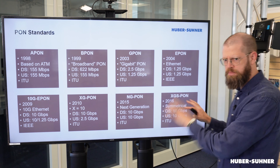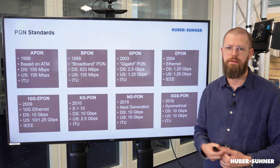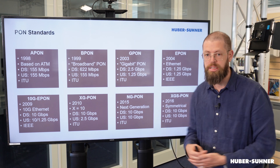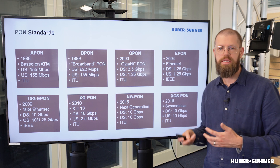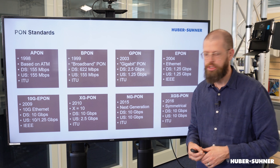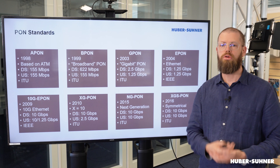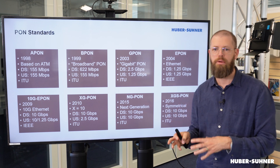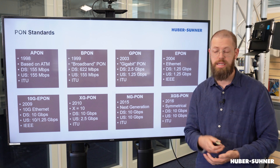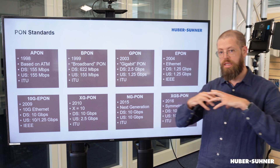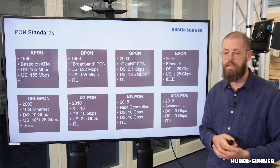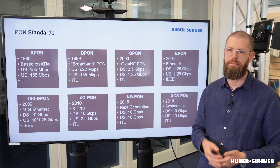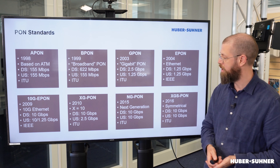Now we have both NG-PON2 and XGS-PON with 10G downstream and upstream, and both are ITU standards — so what's the difference? The difference is the application. XGS-PON is the more cost-effective solution, used in areas where cost is a very big deciding factor, whereas NG-PON2, with its higher aggregated throughput, is used more for high bandwidth demand applications.